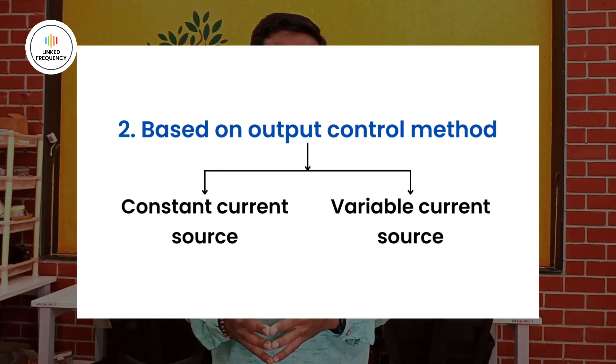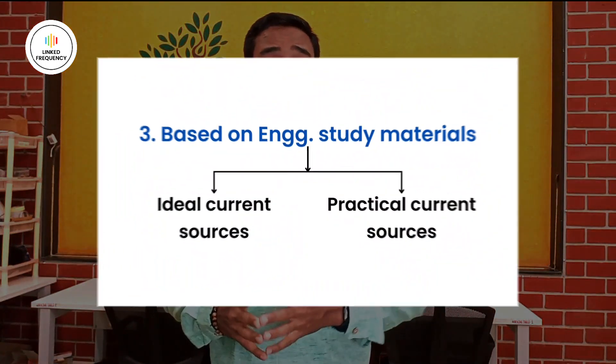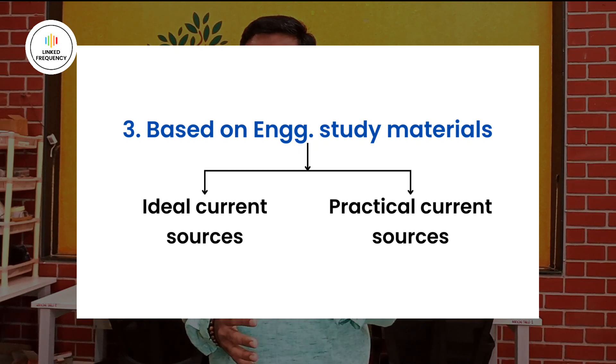Based on the output control method, we have two types: constant current source and variable current source. If a power supply delivers a constant current irrespective of load resistance or load voltage, it is a constant current source. If you have control over how much current is delivered using a knob or programmable controllers, it is called a programmable or variable current source. Based on engineering study materials, we also distinguish between an ideal current source — which is theoretical with zero resistance and doesn't exist in practice — and a practical current source, which is what we use in day-to-day life.